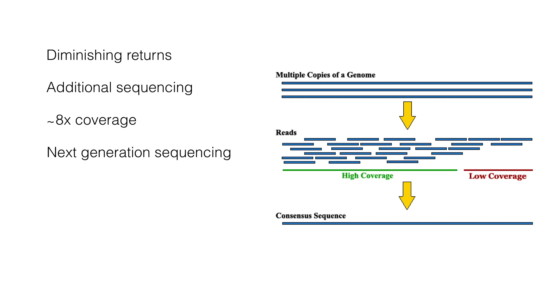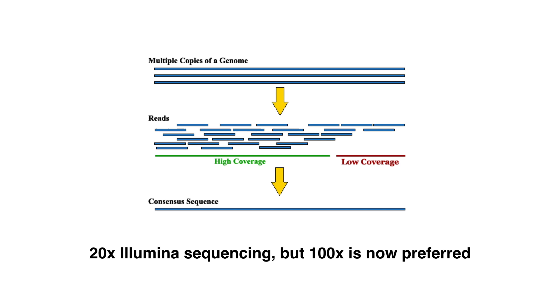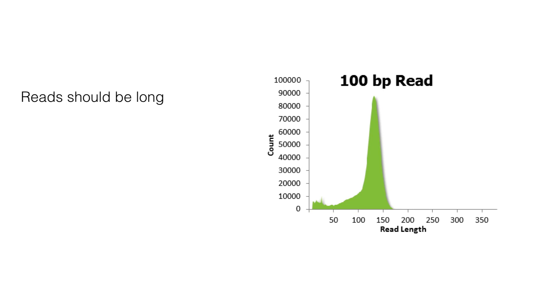For the old Sanger sequencing projects, the point of diminishing returns, where the additional sequencing yields little or no additional genomic coverage, falls at 8x coverage. For the new next-generation sequencing projects, the most popular approach is to use paired-end Illumina reads from 200 to 300 base pair fragments. With at least 20x coverage in such reads, assemblers using either the de Bruijn graphs, overlap or string graphs can assemble contigs covering the unique regions of a larger genome. As previously said, a genome assembly can be achieved from 20x Illumina sequencing, but 100x is now preferred.